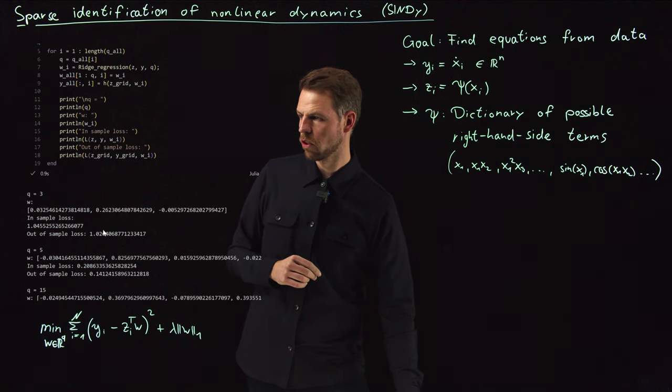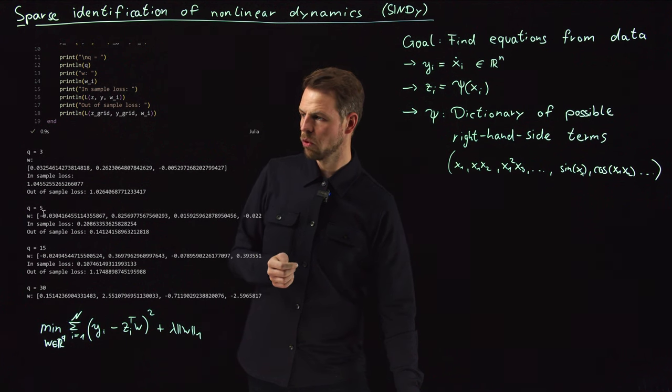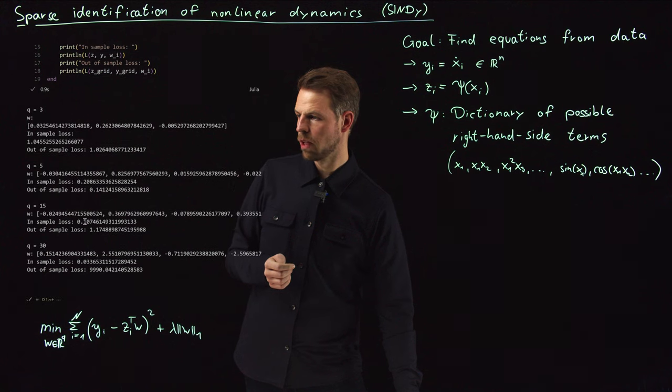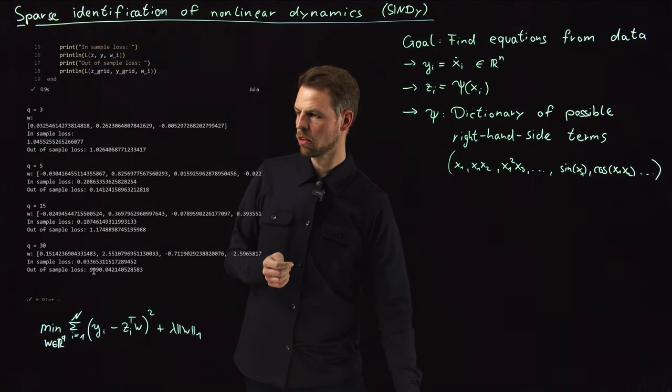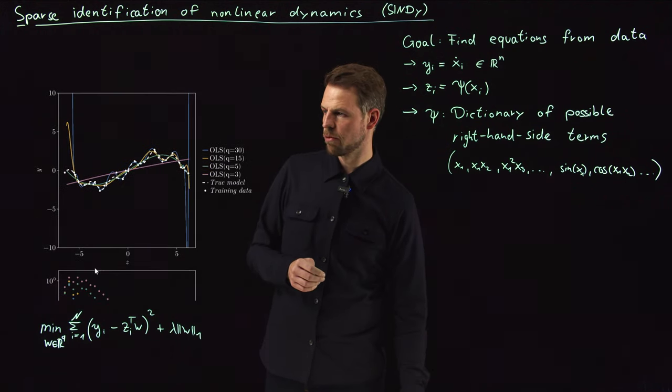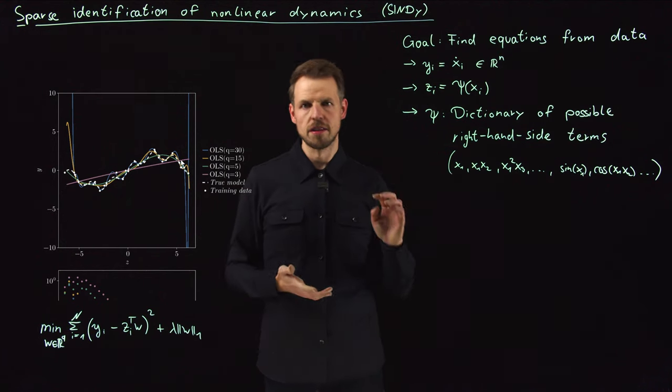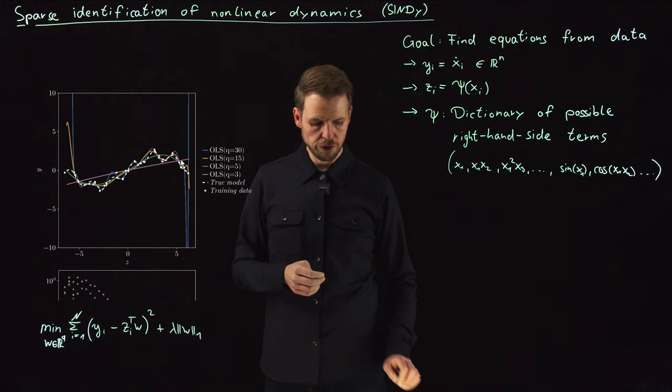As expected, the more you increase the Q, the smaller the in-sample loss becomes. And in the end, the out-of-sample loss increases and in the end, completely horribly. If you look at the figures, you see exactly this behavior that you have with a small polynomial, a line, you have a large in-sample loss, but you don't have this overfitting problem.